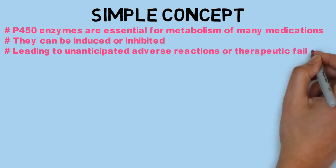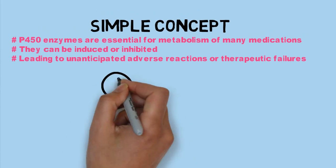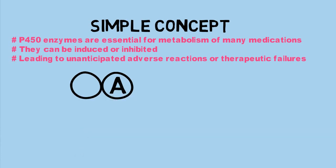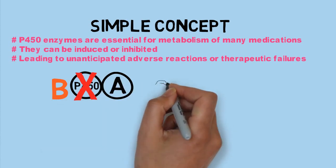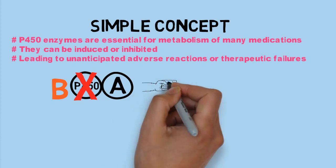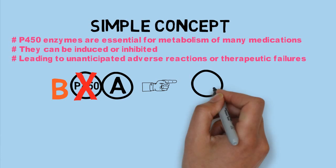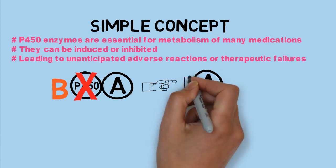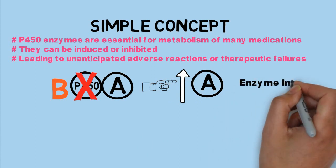So now let's discuss the mechanism of induction and inhibition. Suppose a patient is taking drug A, which is metabolized by cytochrome P450, and you give that patient another drug B which inhibits cytochrome P450. When cytochrome P450 is inhibited by drug B, drug A cannot be properly metabolized, which causes an increase in the concentration of drug A in the blood that can cause toxicity and adverse effects. This is the mechanism of enzyme inhibition.